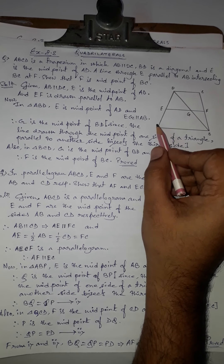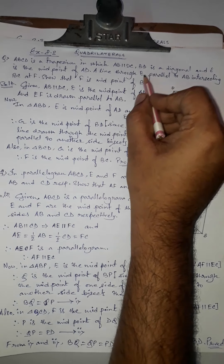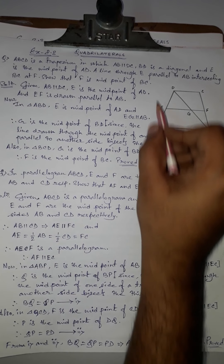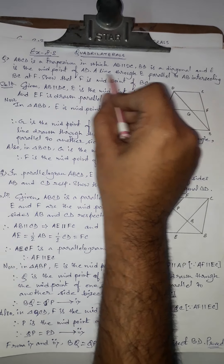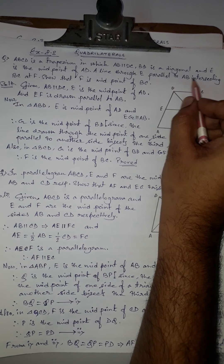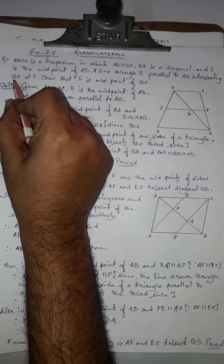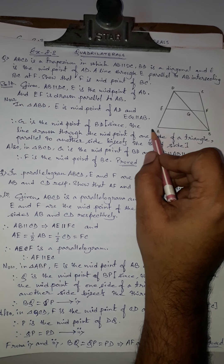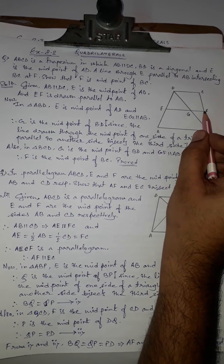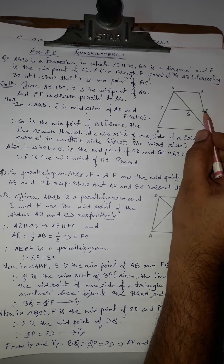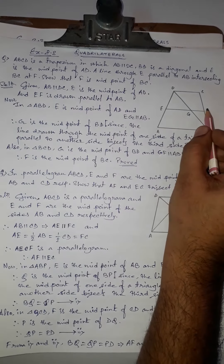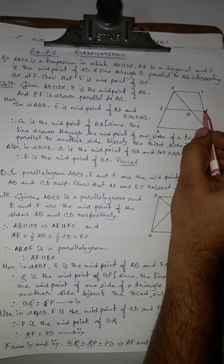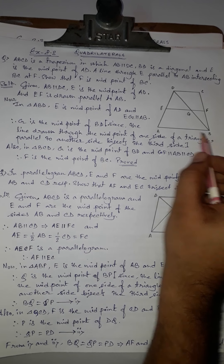A line through E is drawn parallel to AB, intersecting BC at a point F. We have to prove that F is the midpoint of BC.